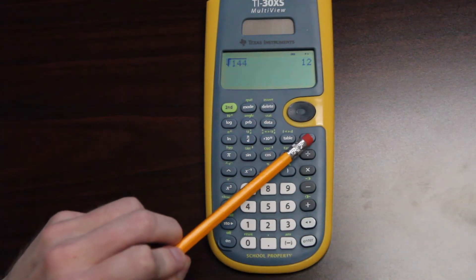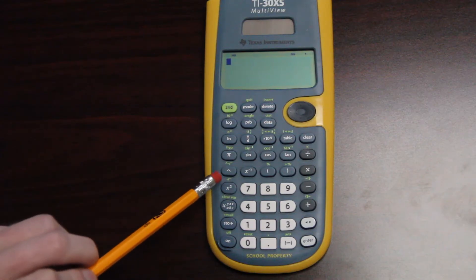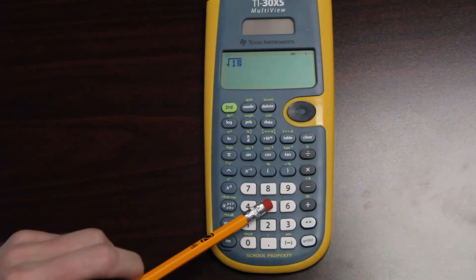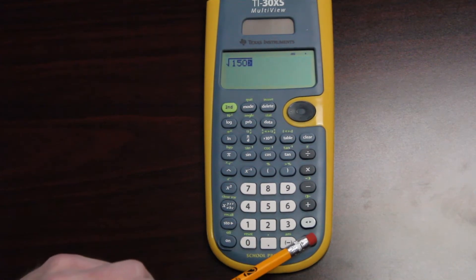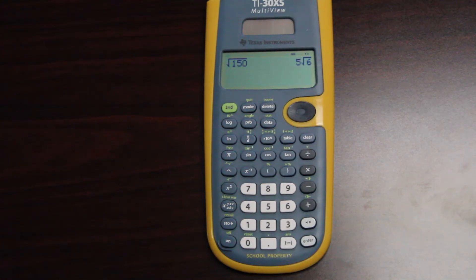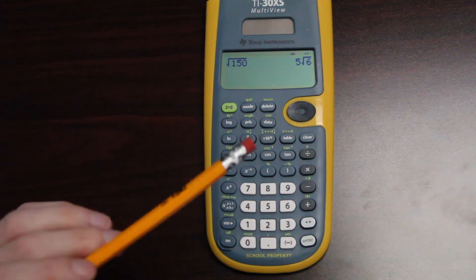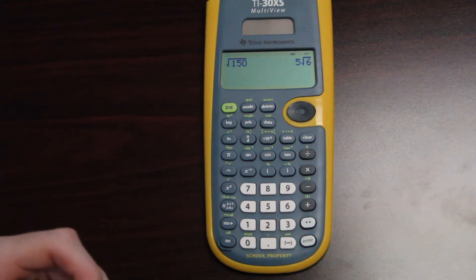Now, it's important to keep in mind that sometimes you'll get a number, like let's say you type in the square root of 150. Sometimes you'll get an answer that looks like this. What that means is it's not a perfect square, and you get an answer that just has a radical as part of your answer.